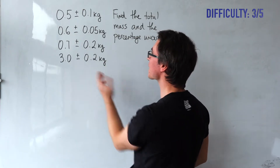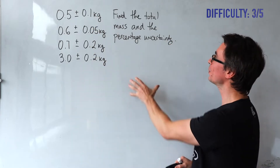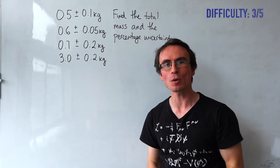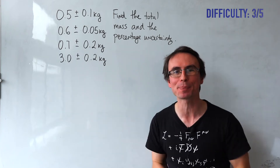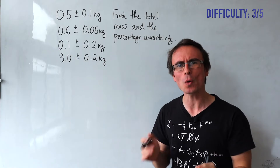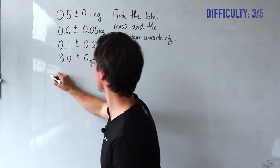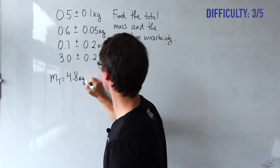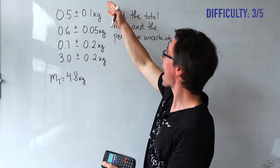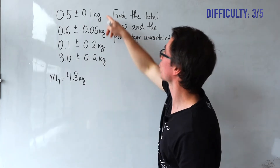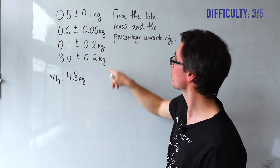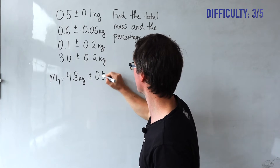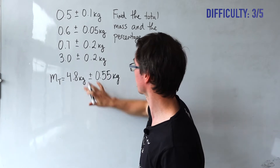Next, we're given values for some masses measured with different top pan balances. We need to find the total mass and the percentage uncertainty. Because we are adding quantities, we need to add the absolute uncertainties. Adding all the numbers together gives m total equal to 4.8 kilograms. Adding the absolute uncertainties: 0.1 plus 0.05 plus 0.2 plus 0.2 gives an overall absolute uncertainty of 0.55 kilograms.